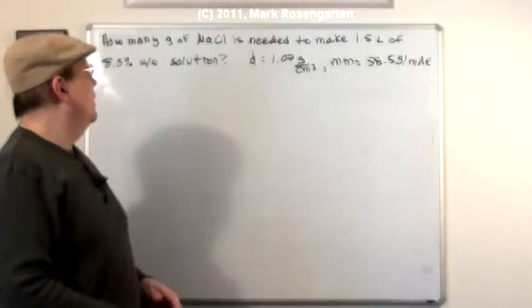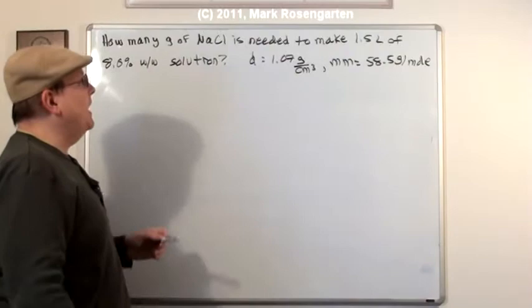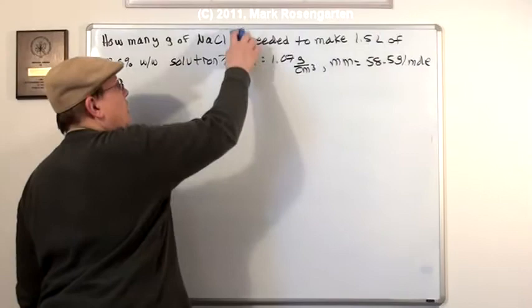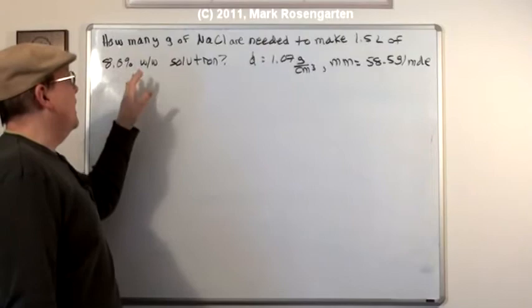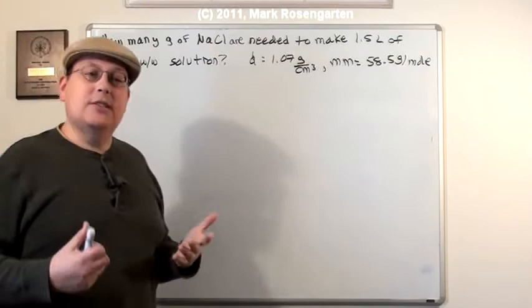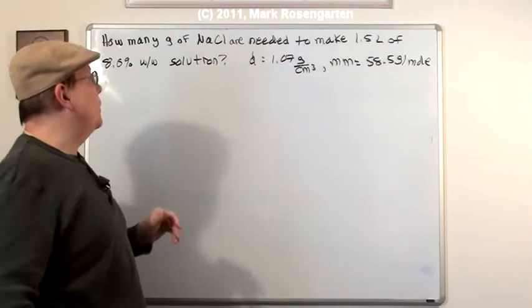how many grams of NaCl is needed? Is needed? Huh. Just goes to show that English can transcend even science. How many grams of NaCl are needed to make 1.5 liters of 8.0% w/w solution? Now, this 8.0%, I'm just estimating that because I couldn't read. You had some notes written in there, and I couldn't quite make out anything beyond 8.0%. The density is 1.07 grams per cubic centimeter, and the molar mass is 58.5 grams per mole.